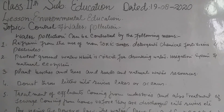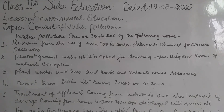Number five: treatment of effluents coming from industries, and also treatment of sewage coming from homes, before they are discharged into rivers or other water bodies.